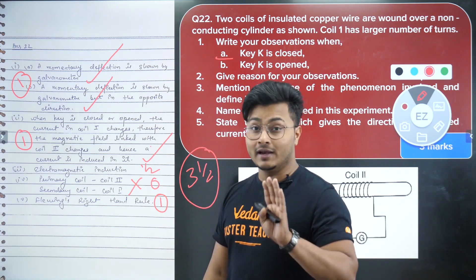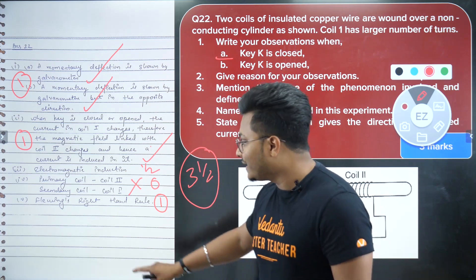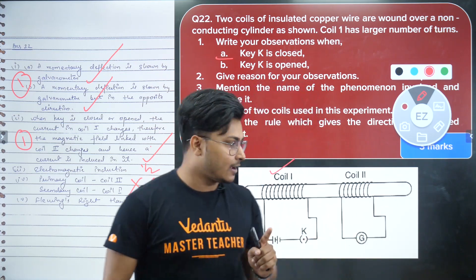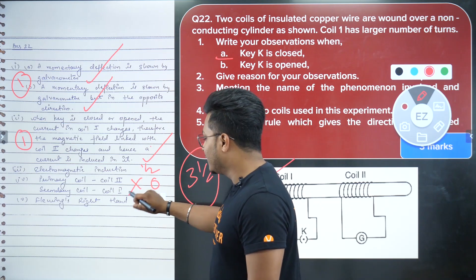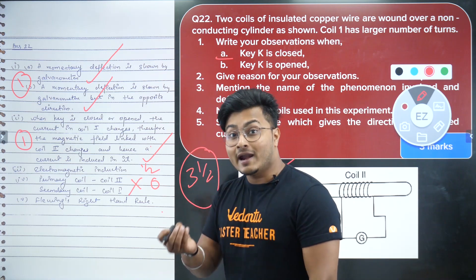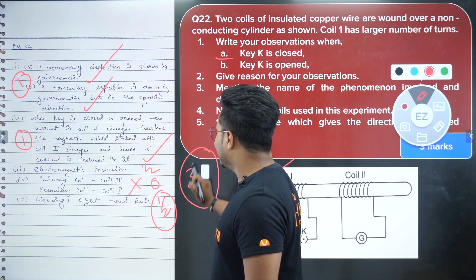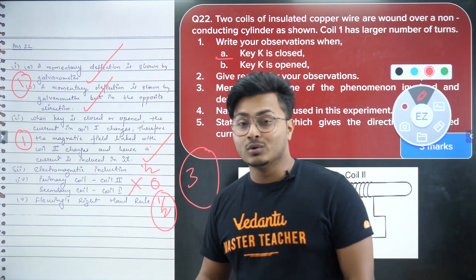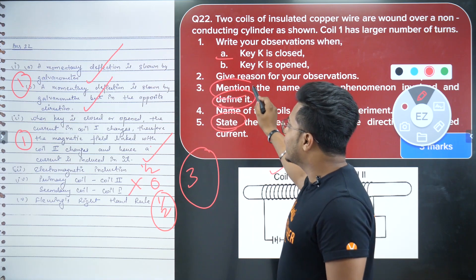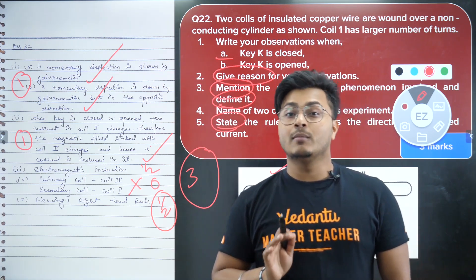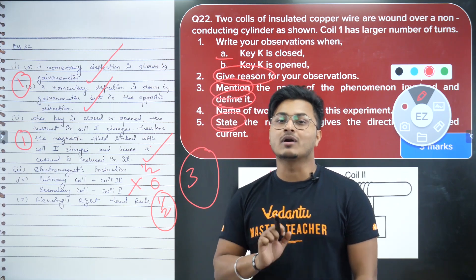Also notice — for the fifth part, the question says 'state the rule which gives the direction.' The student only wrote the name 'Fleming's right-hand rule' but did not write the statement of the rule. Since it says 'state,' you must write the statement. So remember all these key instruction words: what 'state' means, what 'define' means, what 'mention' means, what 'give reasoning' means. Focus on all these words when reading the question.